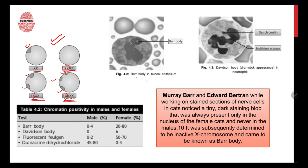This table shows chromatin positivity in males and females. For Bar body: in males it ranges from 0–4% (due to exceptional cases), while in females it is present in 20–80% of cases. For Davidson body: it is 0% in males — meaning it is never present — while there is a 6% chance it is present in females.